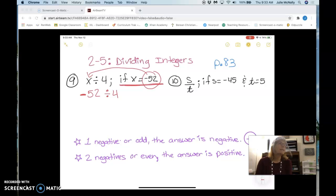So is it negative or positive, first of all? Negative. It's negative. And 52 divided by 4? 13. 13.